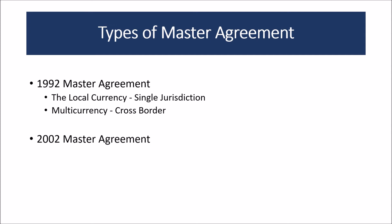The 1992 version of ISDA has two types of templates or versions: the local currency single jurisdiction version and the multi-currency cross-border version. The local currency single jurisdiction version is intended for parties who want to transact in the same jurisdiction and a single currency. This is of rather limited use as it restricts the parties only to single jurisdiction and single currency transactions.